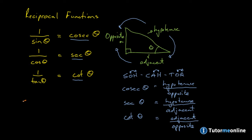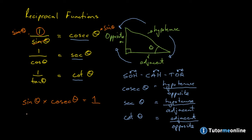Also note that sine of theta multiplied by cosecant of theta is equal to 1 — multiplying both sides of the equation by sine of theta, they cancel each other out, giving cosecant multiplied by sine of theta equals 1. The same holds for cosine of theta multiplied by secant of theta equals 1, and tangent of theta multiplied by cotangent of theta is also equal to 1.